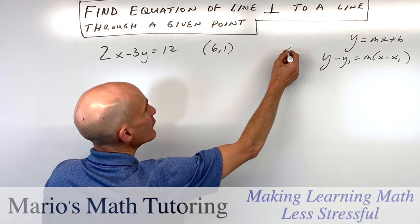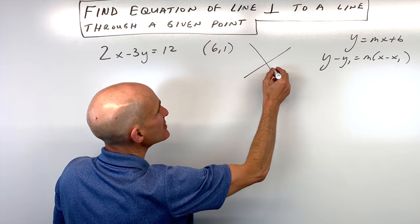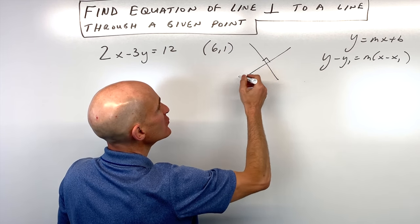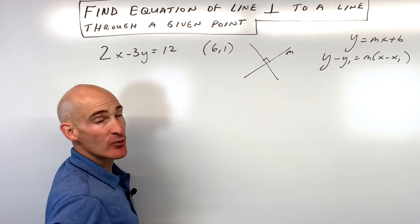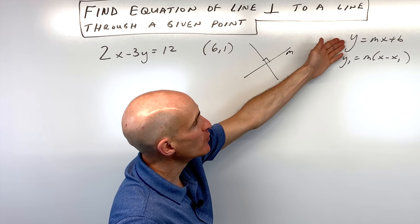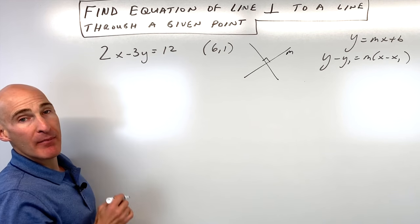The first thing we want to do is find the slope of that original line. To do that, we're going to rewrite it in the slope-intercept form by getting y by itself.